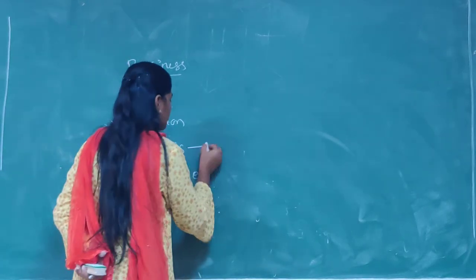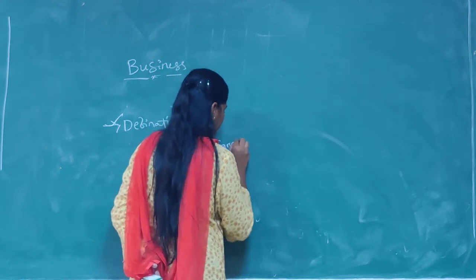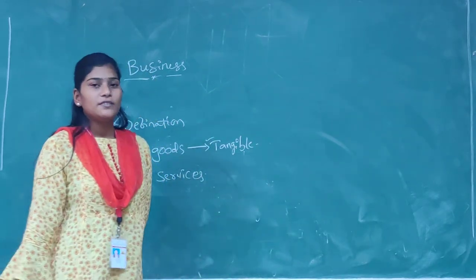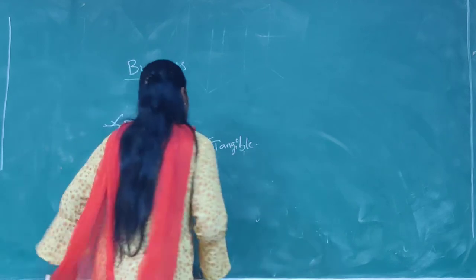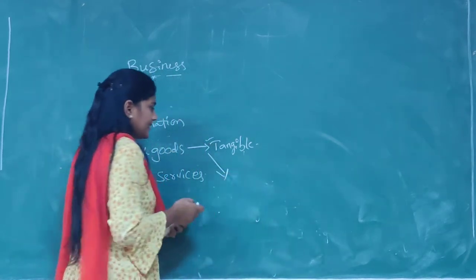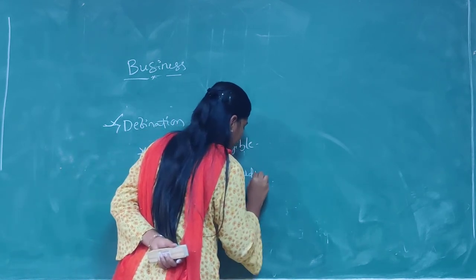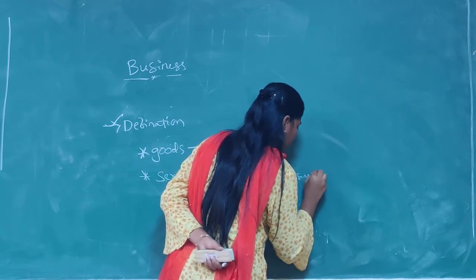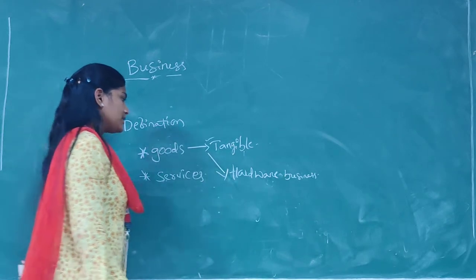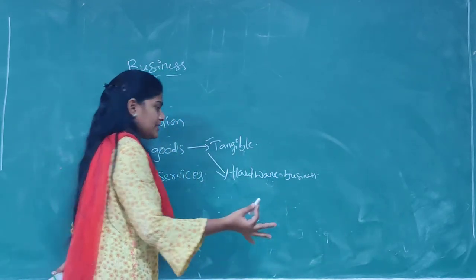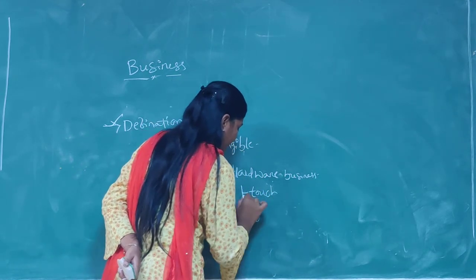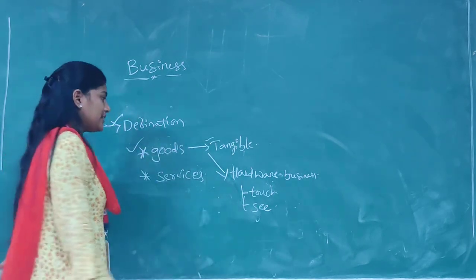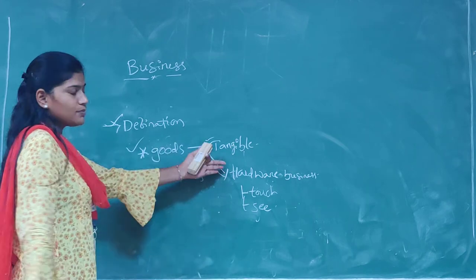When we say goods, goods are tangible in nature. Tangible means which we can see and touch. For example, if we take the example of a hardware business, we have products like computer parts, mouse, and so on, which we can touch and see. So goods are tangible in nature — which we can see and touch — and the best example would be a hardware business.